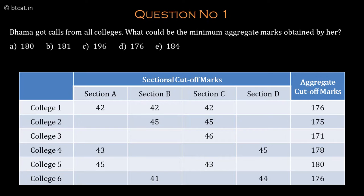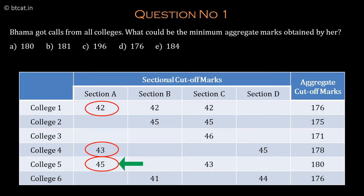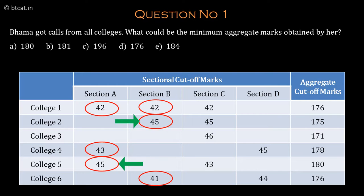Looking at section A: college 1 requires 42, college 4 requires 43, and college 5 requires 45. So she must get 45 marks in section A, since 45 is the highest across that column. Similarly, she should get 45 in section B, since 45 is the highest in that column. She should get 46 in section C, and by the same logic she should get 45 in section D.